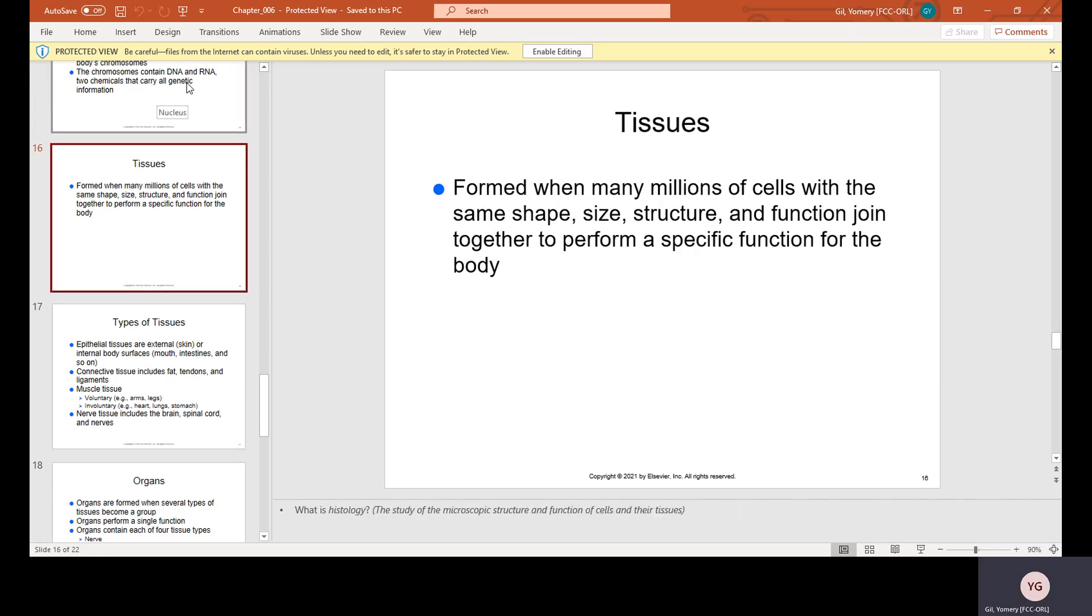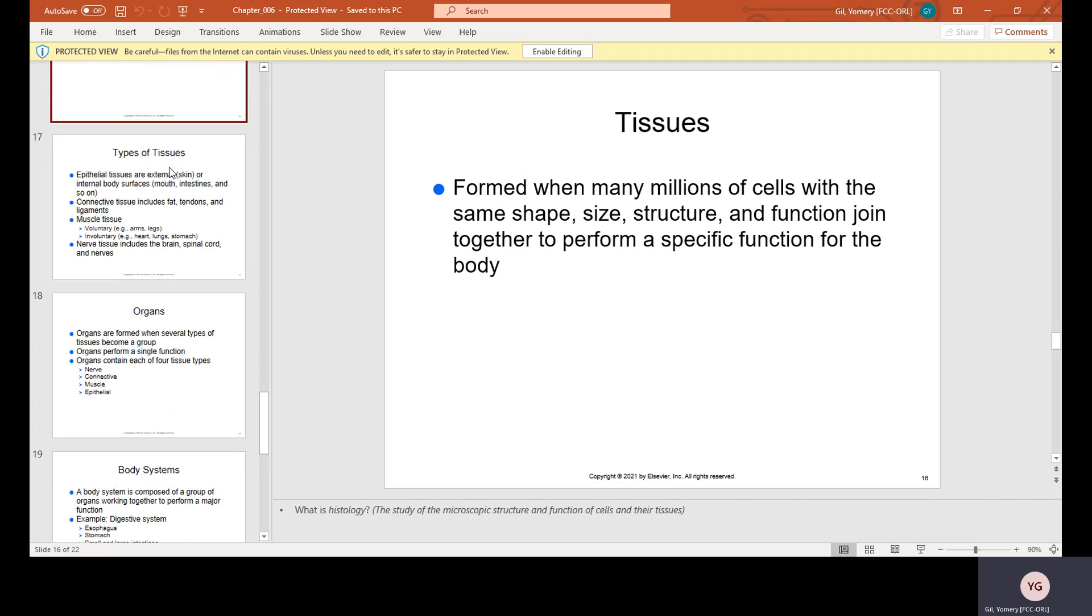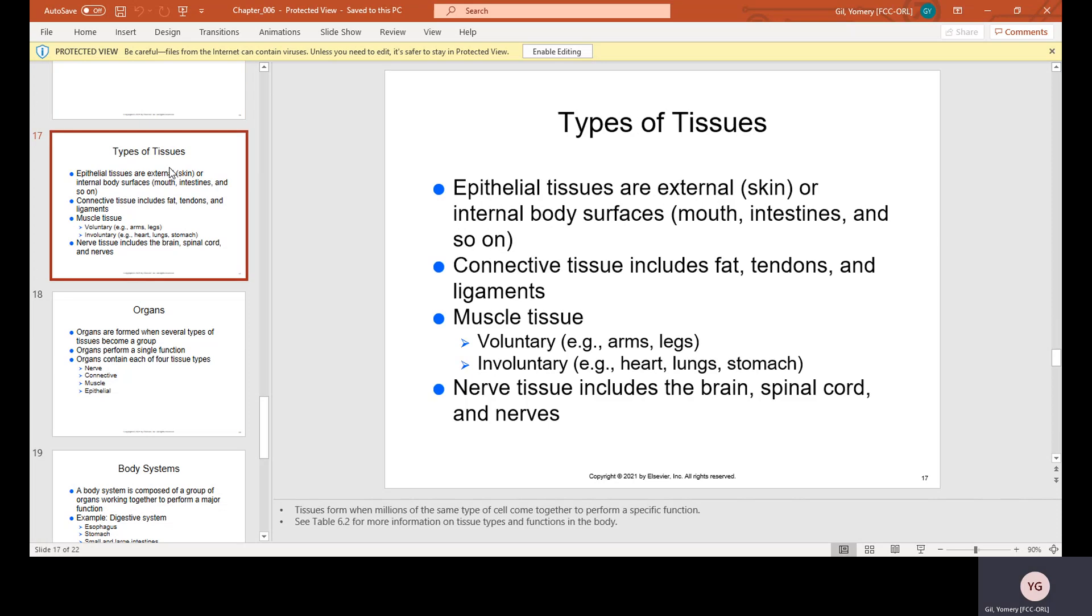Tissues. They're formed when many millions of cells with the same shape, size, structure, and function join together to perform a specific function for the body. Types of tissues. There's epithelial tissues, which are external skin or internal body surfaces: mouth, intestines, and so on.